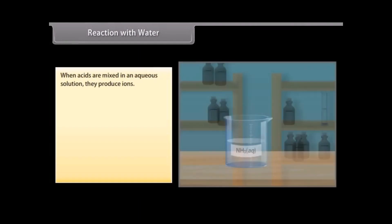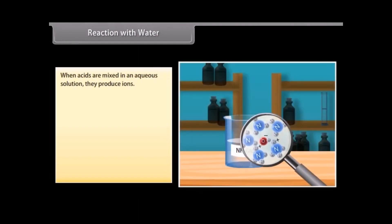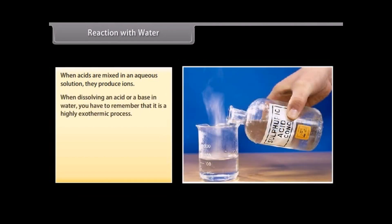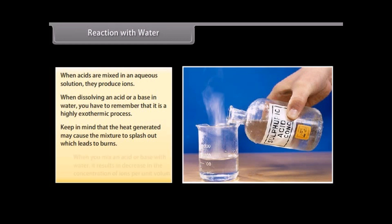Reaction with water: when acids are mixed in an aqueous solution, they produce ions. When dissolving an acid or a base in water, remember that it is a highly exothermic process. While adding water to a concentrated acid, the heat generated may cause the mixture to splash out, leading to burns, and may cause the glass container to break due to excessive local heating. When you mix an acid or base with water, it results in a decrease in the concentration of ions per unit volume. This process is called dilution, and you get a diluted acid or base.